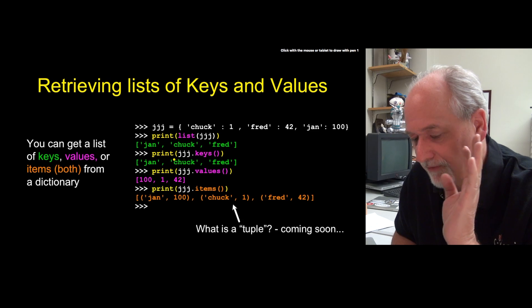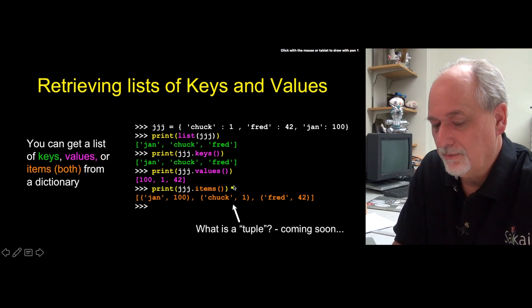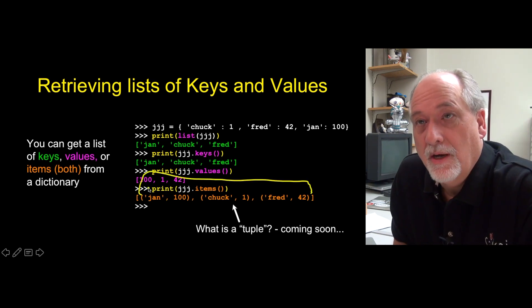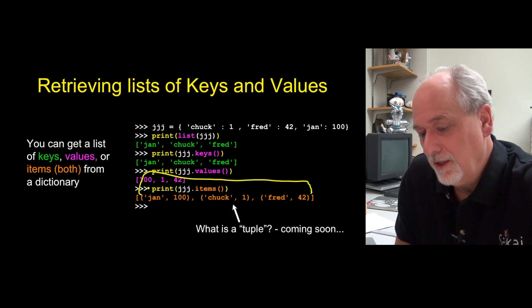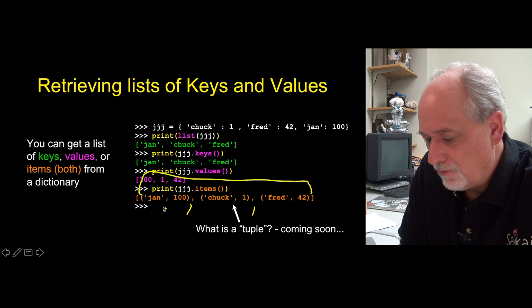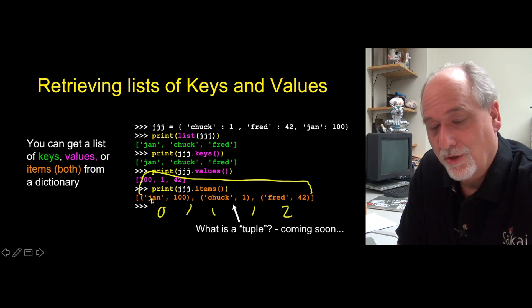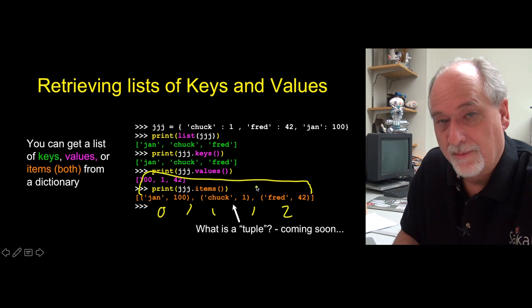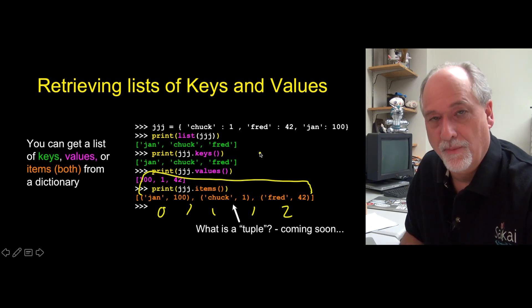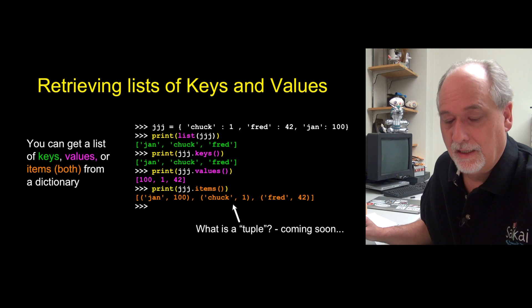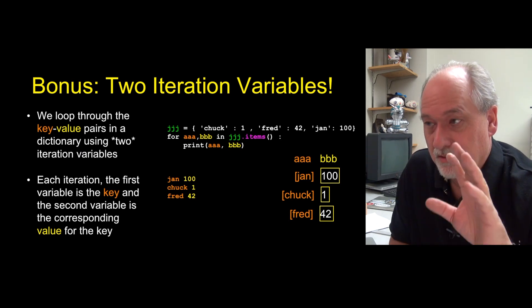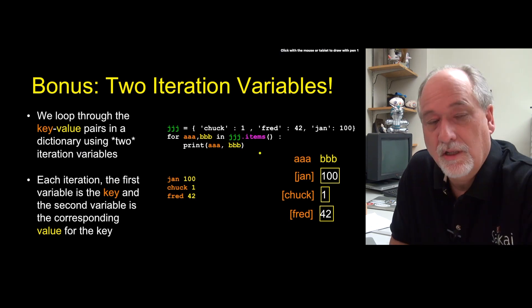And then there is a third thing that we can do. And that is ask for the items. And we can say give me the items. And that gives us a list. This is our first really kind of composite combined data structure. Where it is a list, a three item list. Zero, one, two. And inside that there is what are called two tuples. Jan maps to 100, Chuck maps to one, Fred maps to 42. Coming up next we're gonna have a whole chapter on that. And so just take a look at that for the moment. And we will come back to that in some detail later. This whole items idea that gives us back a list of key value pairs. Because it's not just a list of keys or a list of values. It's actually a list of key value pairs.